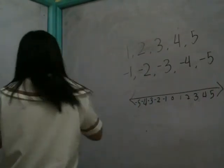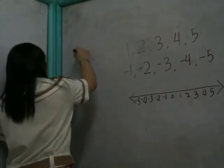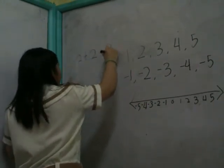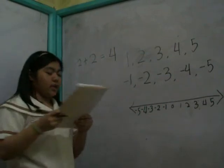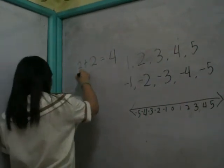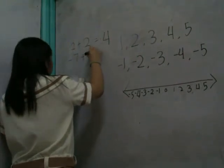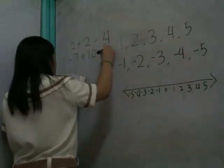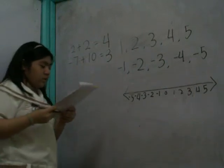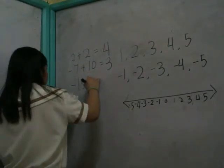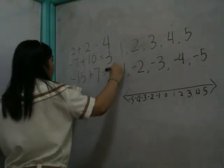For example, you have 2 plus 6. We have the left of four. Then negative 7 plus 10 is equal to 3. Then negative 16 plus 7 is equal to 8.